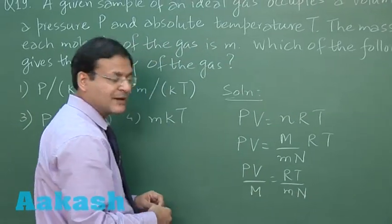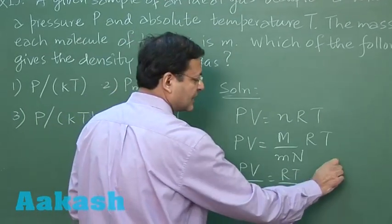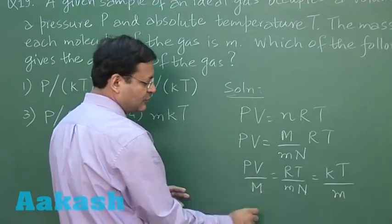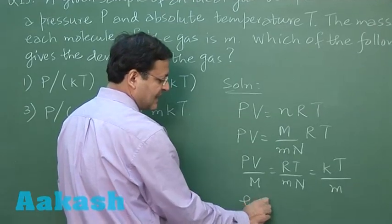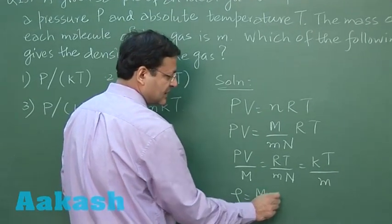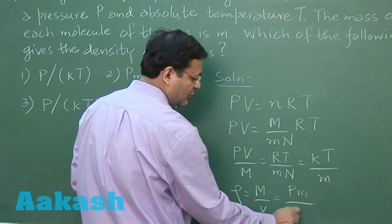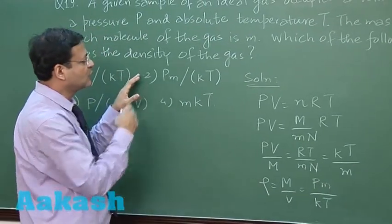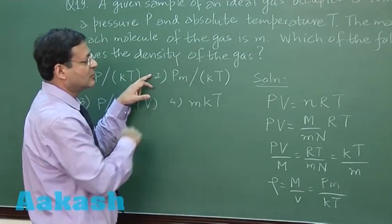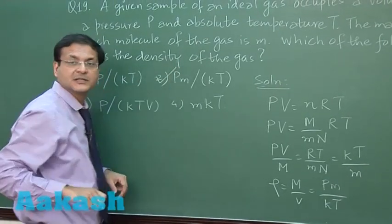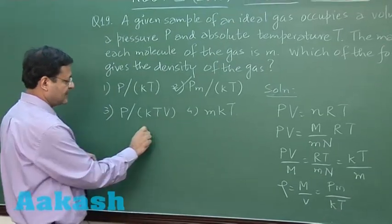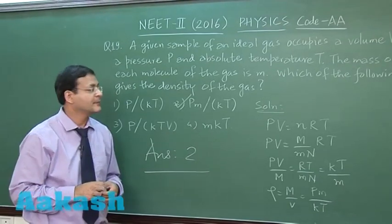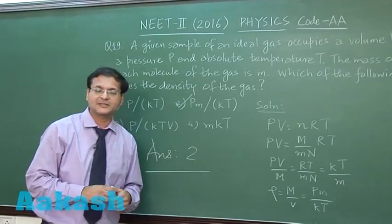R by capital M this is also called Boltzmann constant, so you can write it as small k capital T by small m, and you are supposed to write down this density. So if you see, density is m by V, so this is nothing but P small m by small k into capital T. So you can see that this option number 2 has got this expression P small m upon KT. So I will be marking answer 2 for question 19. Now let us switch over to next question, that is question 20.